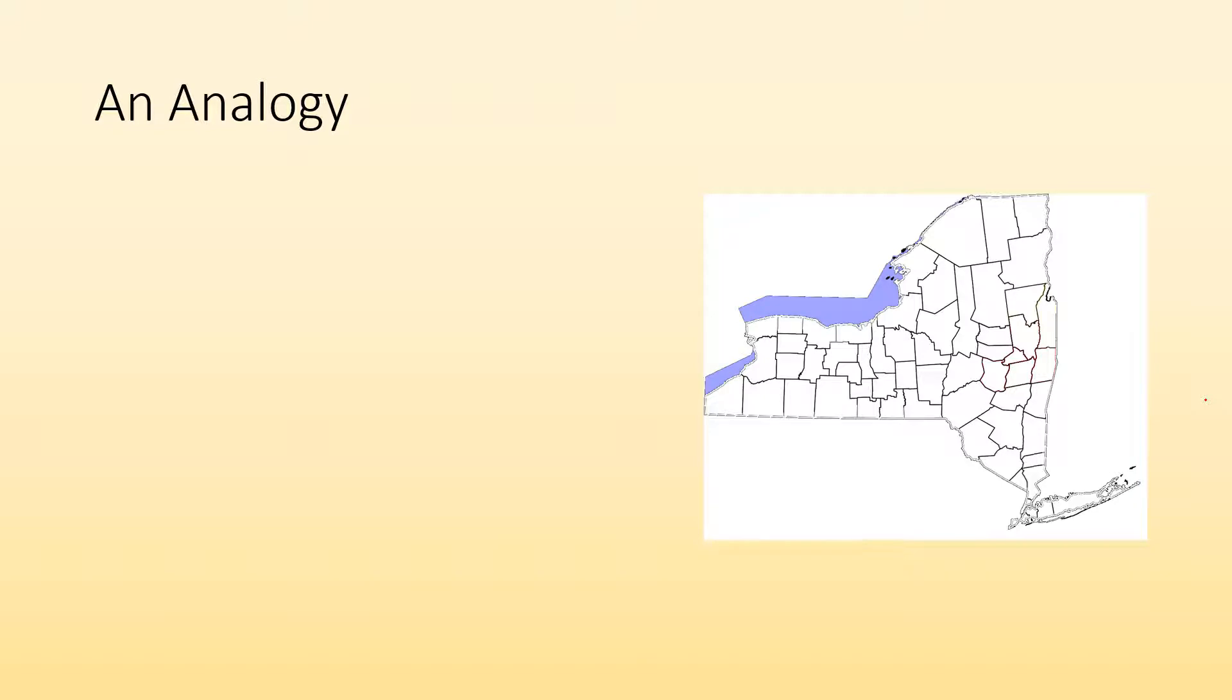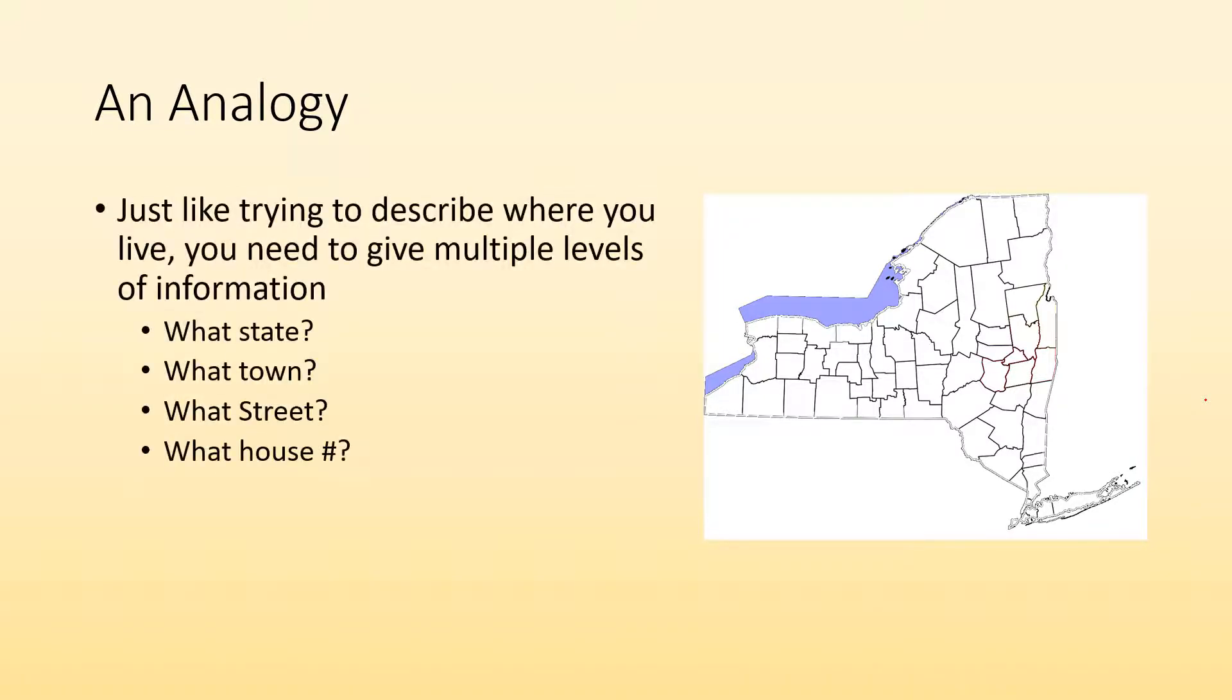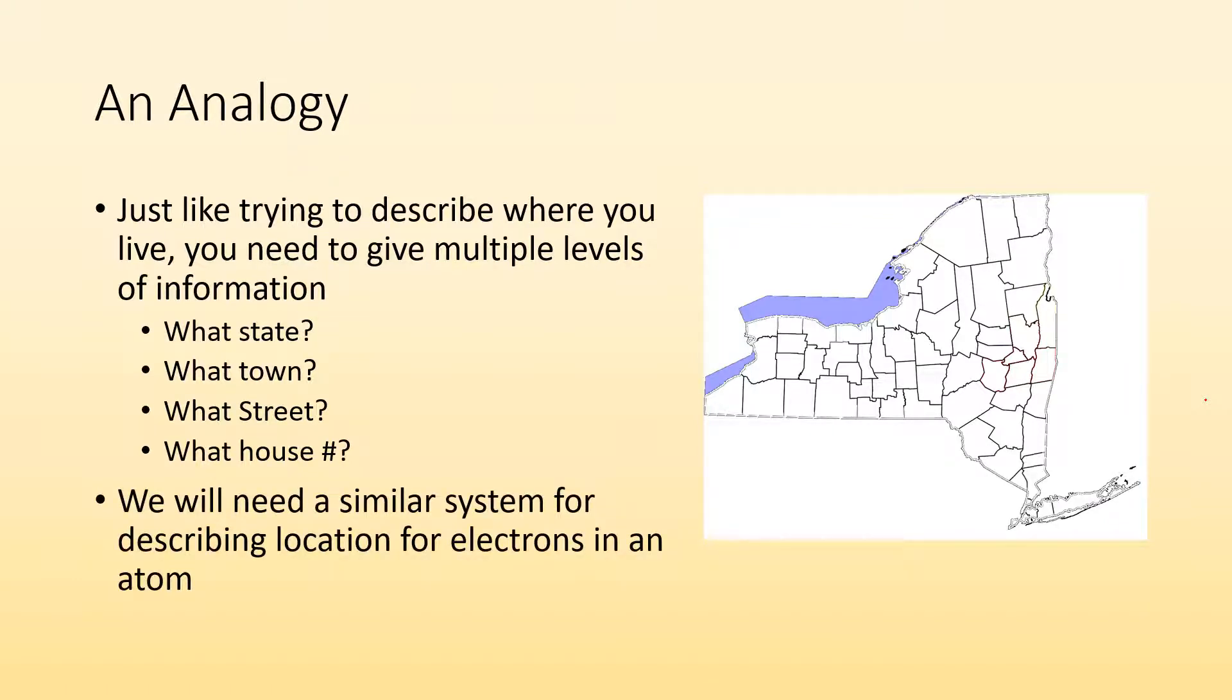So here's an analogy. Why can't we just say there's the electron? Just like if you're trying to describe where you live to somebody, you need to give them multiple levels of information. You might start with, what state do you live in? I live in the state of New York. All right, well, that's not really helping me. That's still a whole region. Well, what town do you live in? What street do you live on? What's your house number?